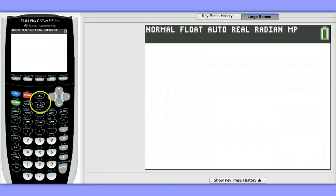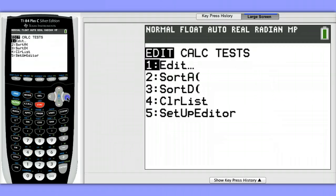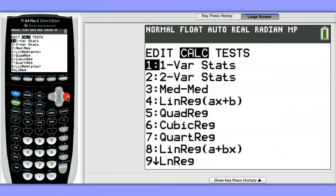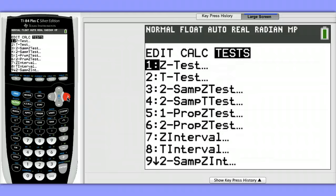To begin, we'll hit Stat, go over to Tests, and then choose Option 5, two-proportion z-test.